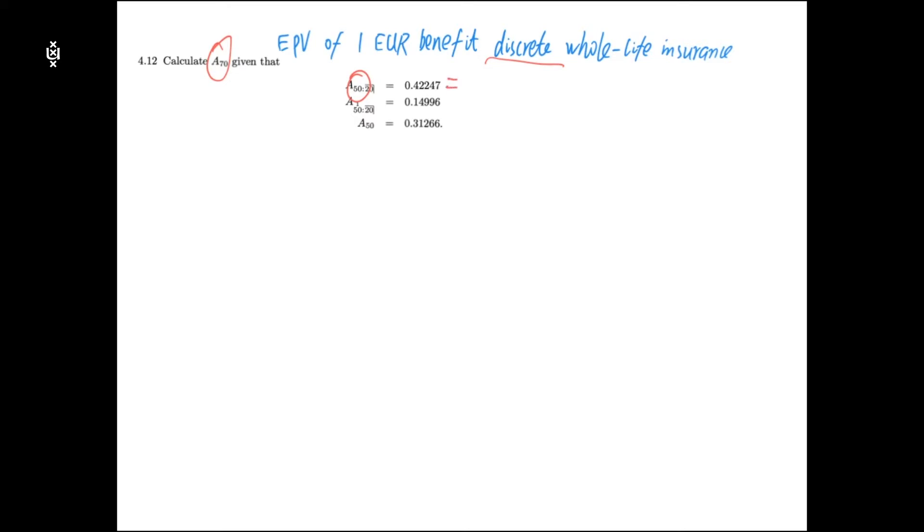Which is the summation of term insurance for 20 years, denoted with the actual notation here, plus a pure endowment insurance.